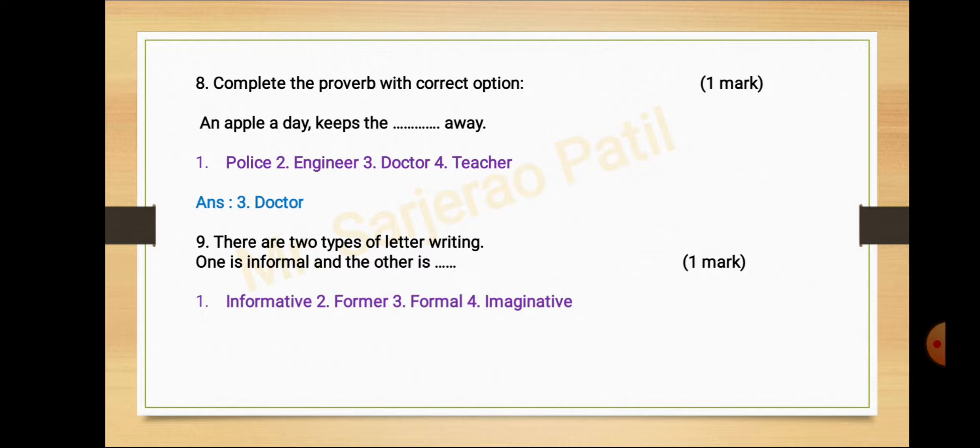Activity number nine, there are two types of letter writing. One is informal and the other is dash dash. Options: informative, former, formal, imaginative. Answer is option number three, formal.